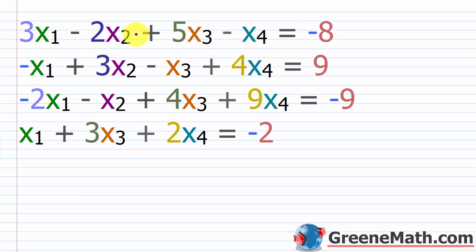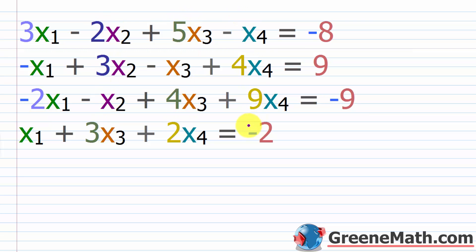We want to take the numerical information from each equation and set up the augmented matrix. You might notice that we've labeled our variables a little differently. In pre-calculus or college algebra, you might see X, Y, Z, and W, where W comes first in alphabetical order. But I'm using the notation X₁ through X₄. Whatever you're comfortable with is fine — you can replace X₁ with W, X₂ with X, X₃ with Y, and X₄ with Z. I'll follow the format of X₁ first, then X₂, X₃, X₄.